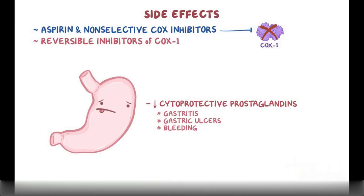Reversible inhibitors of COX-1 cause less gastrointestinal problems when compared to aspirin. And selective COX-2 inhibitors, like celecoxib, cause the least GI side effects since they don't affect COX-1 at all.